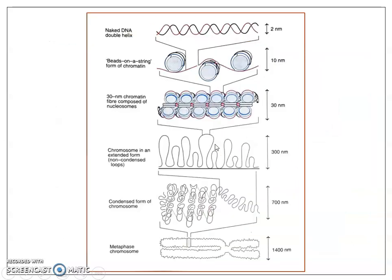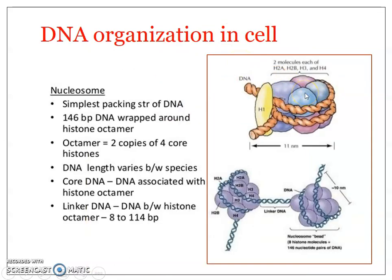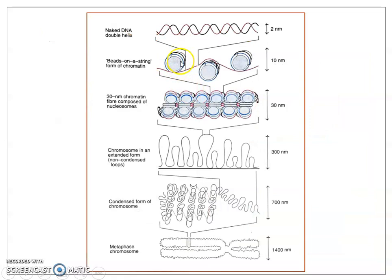Now, how does a nucleosome actually form? The DNA double helix has a width of just 20 angstroms — that is just 2 nanometers. These structures are the nucleosomes. You can see a nucleosome, the spacer DNA between nucleosomes, and the core DNA inside the nucleosome. This almost looks similar to a set of beads on a string.